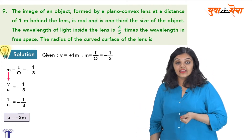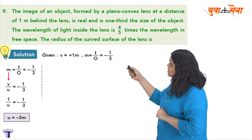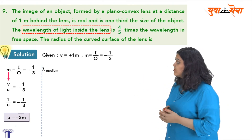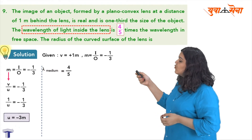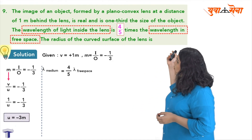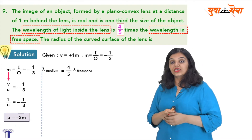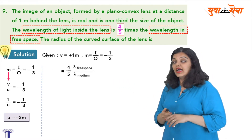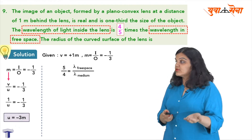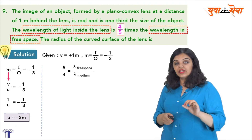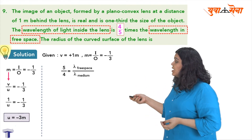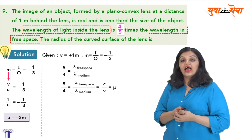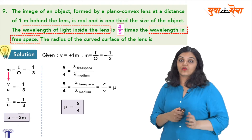Next I find the refractive index using the information given. The wavelength of light inside the lens (lambda medium) equals 4 upon 5 times the wavelength in free space. Rearranging, the ratio of wavelength in free space to wavelength in the medium equals 5 upon 4. Since the ratio of wavelength in free space to wavelength in any medium equals the refractive index, we get mu equal to 5 upon 4.